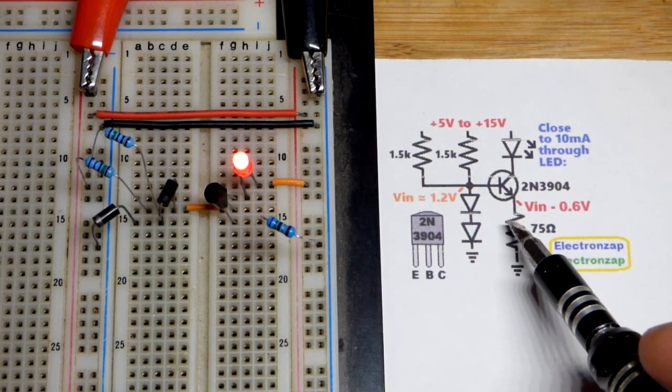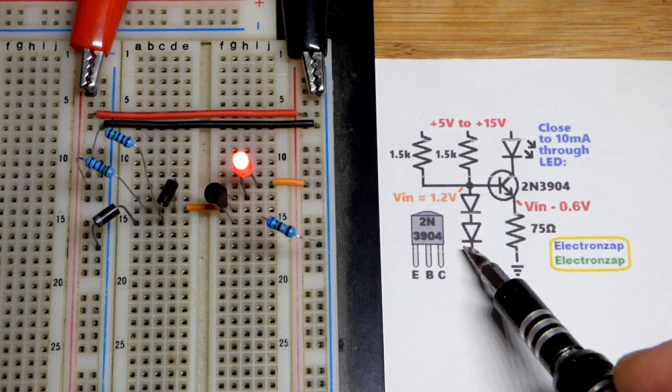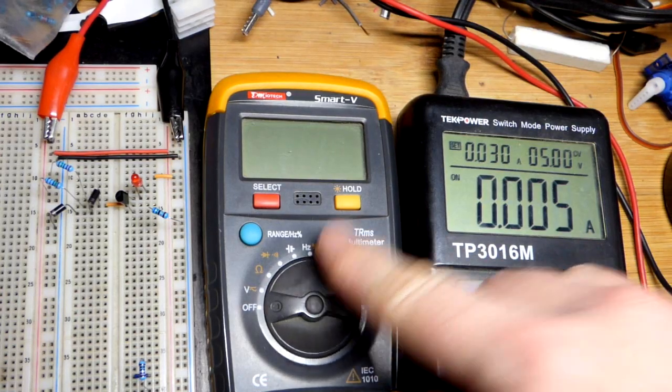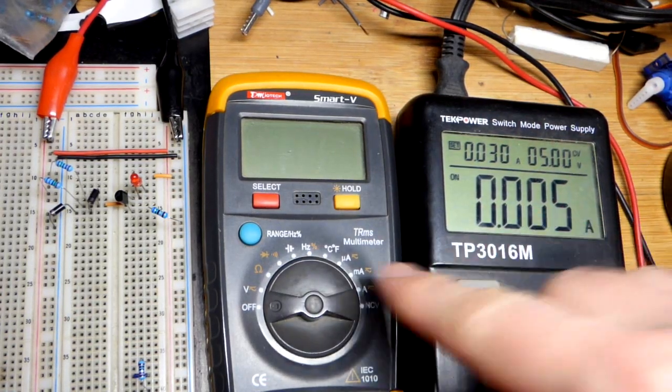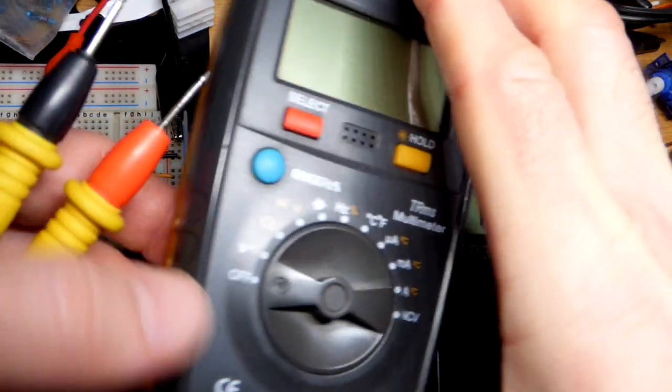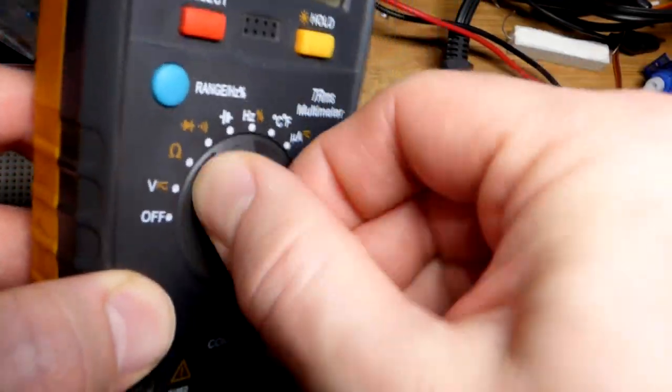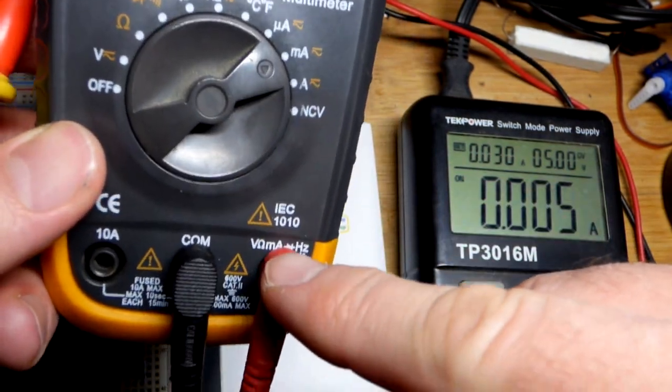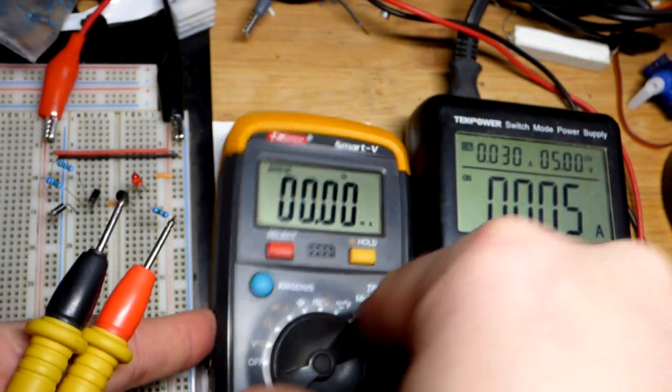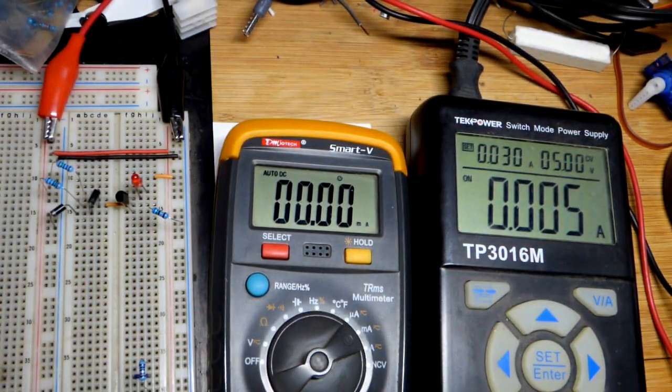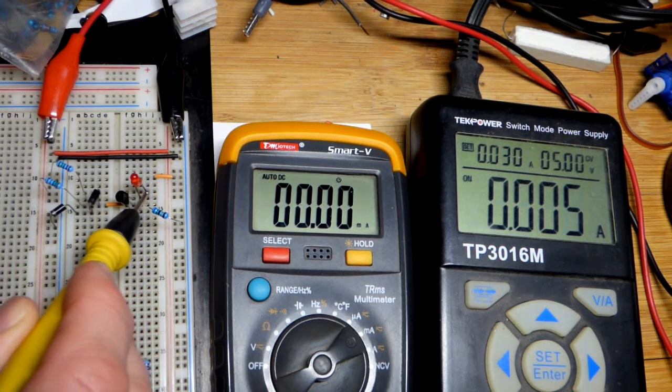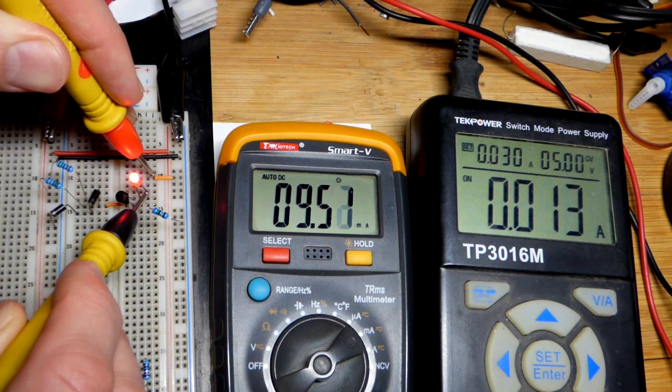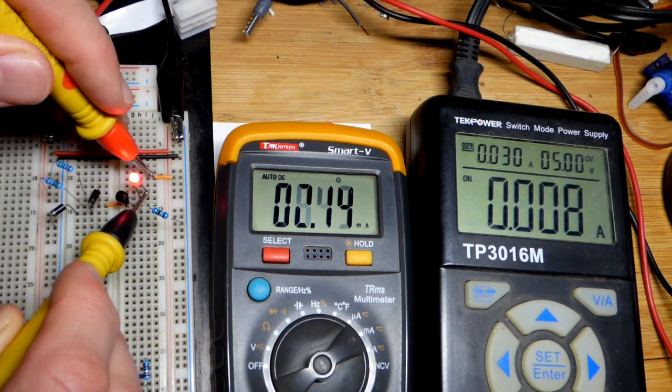We have it wired as a current source. Of course we're wasting a lot of current here. This is not an efficient design, but it should be an educational one. Now we will measure the current with the multimeter. We're going to measure the current through the LED. We're going to go to milliamps right there, put it to a number that's higher. We don't need to move the red probe for high current with this particular meter.